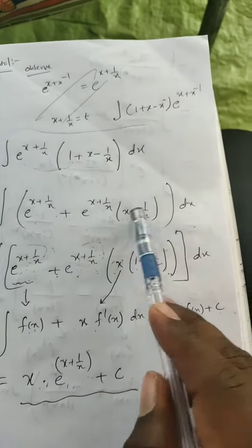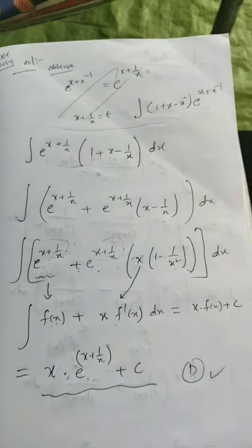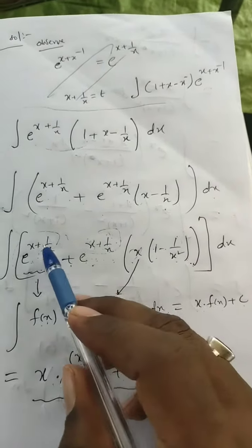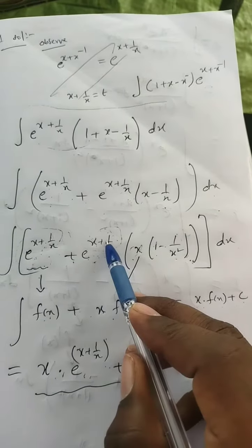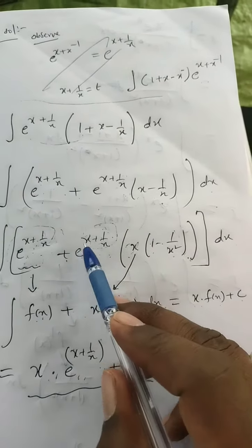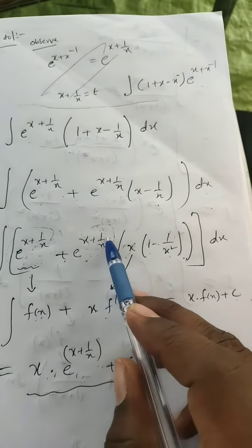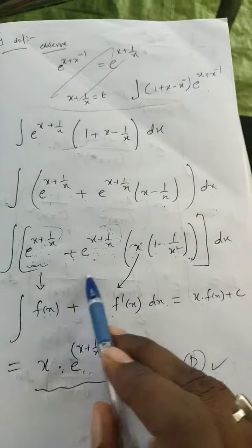Now what is this here? This is the function f(x). And what is the differentiation of this function? e^x differentiation is e^x, and differentiation of this by chain rule: x differentiation is 1, and 1/x differentiation is -1/x^2. See, this entirely becomes f'(x).